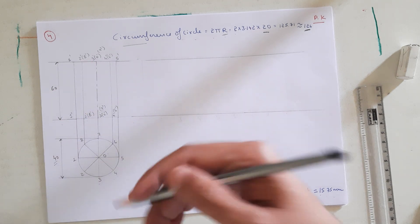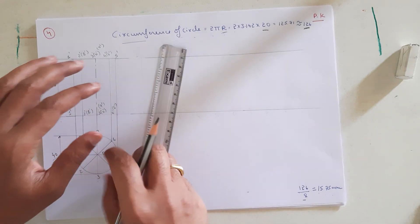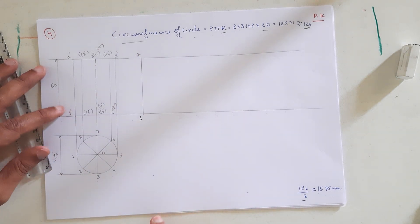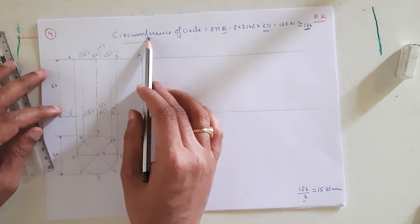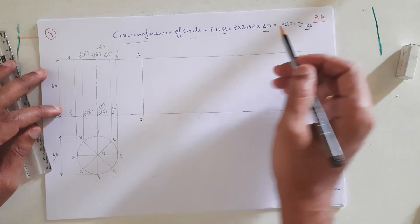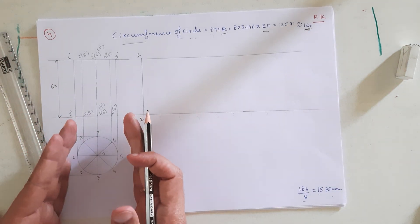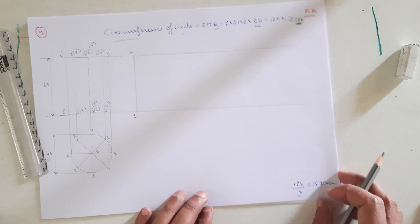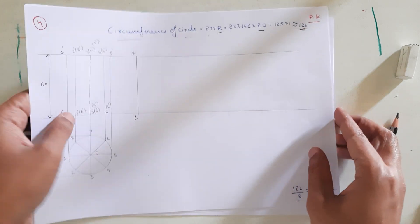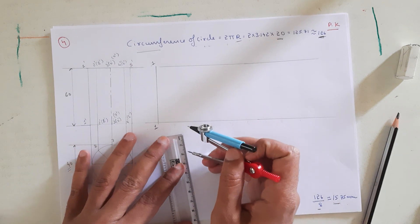The invisible generators are shown inside parentheses. Now let us write the development of the given cylinder. I have drawn a parallel line and located point 1 and 1'. Since we don't have any edges, we take the circumference of the circle, given by 2πr = 2 × 3.142 × 20, which gives approximately 126 mm. We divide this into 8 equal parts, so 126 divided by 8 equals approximately 15.75 mm.